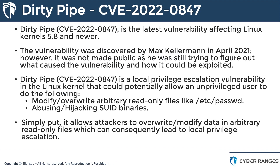So what is Dirty Pipe? Dirty Pipe, also known as CVE-2022-0847, is the latest vulnerability affecting Linux kernels ranging from version 5.8 and newer. The vulnerability was discovered by Max Kellerman in April 2021. However, it was not made public as he was still trying to figure out what caused the vulnerability and how it could be exploited. I recommend you take a look at Max Kellerman's blog post on how he discovered it while assessing an issue with weekly backups.